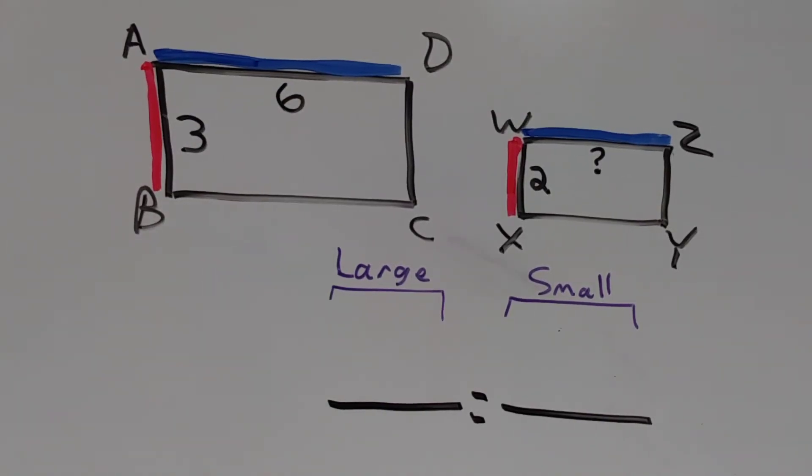To find out the length of this mystery side, we can use a proportion, but every time we construct a proportion, we have to make sure that our ratios in that proportion are consistent. So we'll make sure that the left ratio is the large rectangle, and the small rectangle has a ratio on the right side.